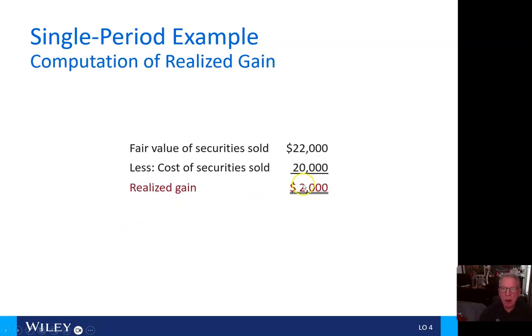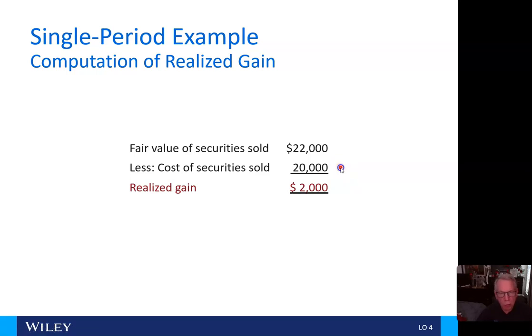The fair value of the securities that we sold was $22,000. The cost of the securities sold was $20,000, so they realized a gain of $2,000.